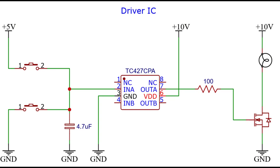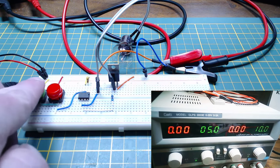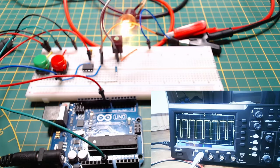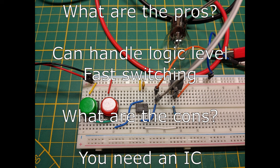Number 2: Low side driver IC. This is a low side gate driver IC circuit. You can control it with a high or low signal, or you can give it a PWM signal. It can take a 3.3 or 5 volt signal as an input, and depending on whether the signal is high or low, it will either send the driver's supply voltage to the gate to turn it on, or it will connect the gate to ground to turn it off. Pros: can handle logic level, fast switching. Cons: you need an IC.